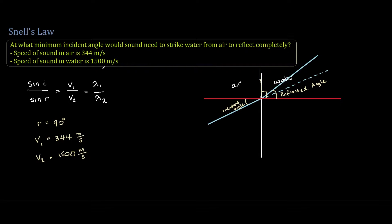So if we use Snell's law, we can forget about wavelengths in this question. We have sin I equals V1 sin R divided by V2. So this would be 344 sin 90 degrees divided by 1500.